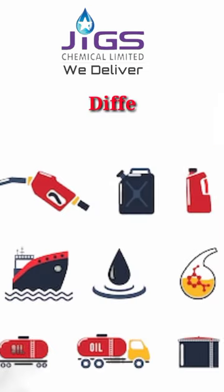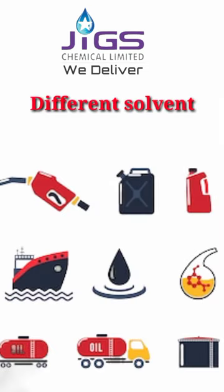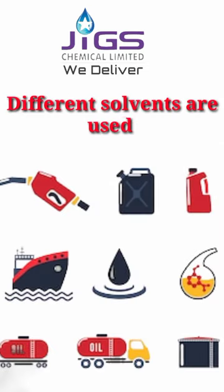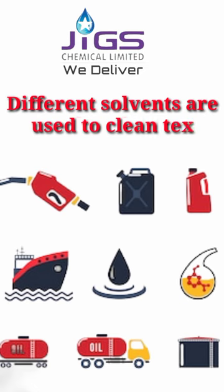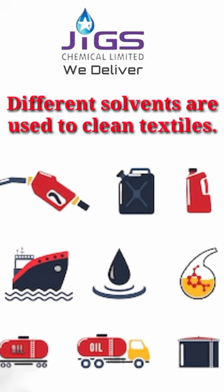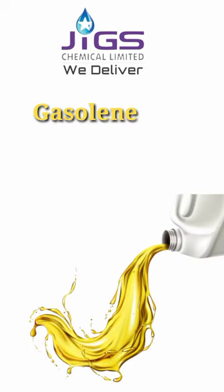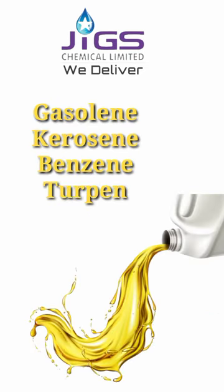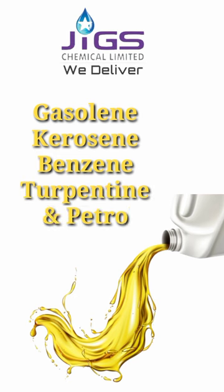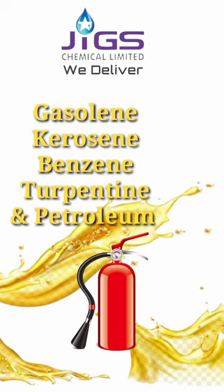Different solvents are used by dry cleaners to clean textiles. The early solvents included gasoline, kerosene, benzene, turpentine, and petroleum, all of which were extremely flammable and hazardous.